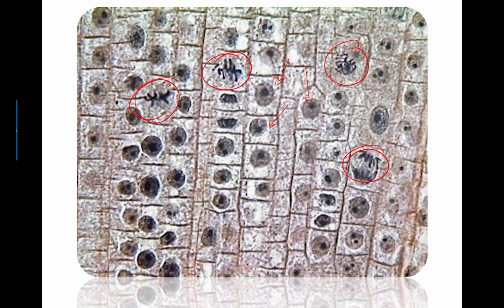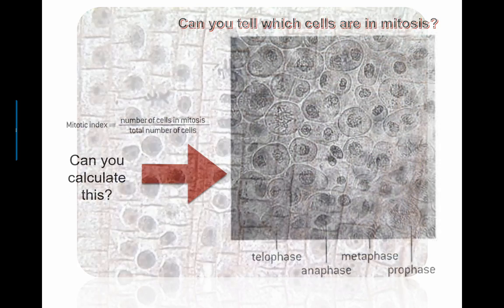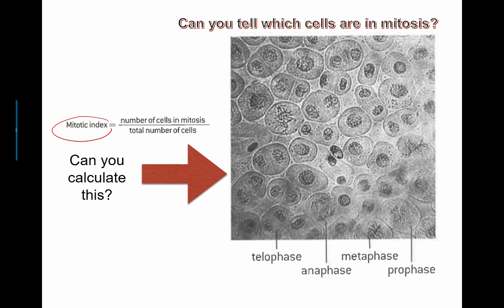And if you can calculate all of this and count up the total number of cells that is here and the number that are actually in mitosis, it can help you figure out something called the mitotic index. And it just gives you an idea, and you can actually identify what type of cell this might be, because different types of organisms have different types of cells that divide at different rates.